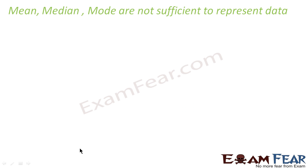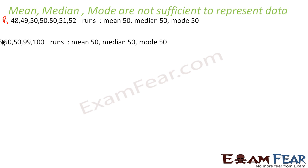We have seen that sometimes mean, median, and mode are not sufficient to represent data. I'll explain this. This guy is Player 1 and this guy is Player 2. Both have played 7 innings each.